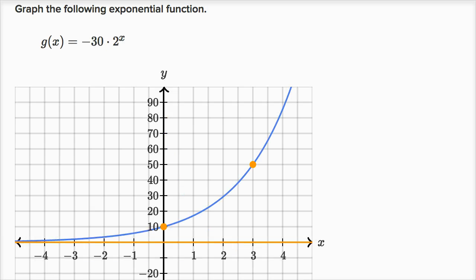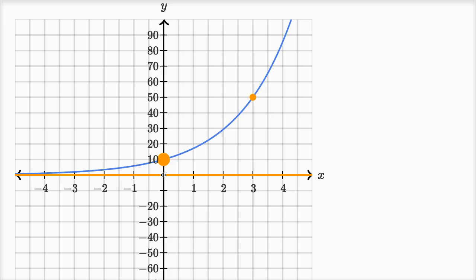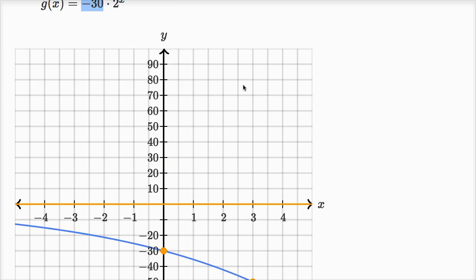Let's do another one. Graph the following exponential function. Same logic—when x is zero, g of zero is just going to boil down to that initial value. The initial value is negative 30.